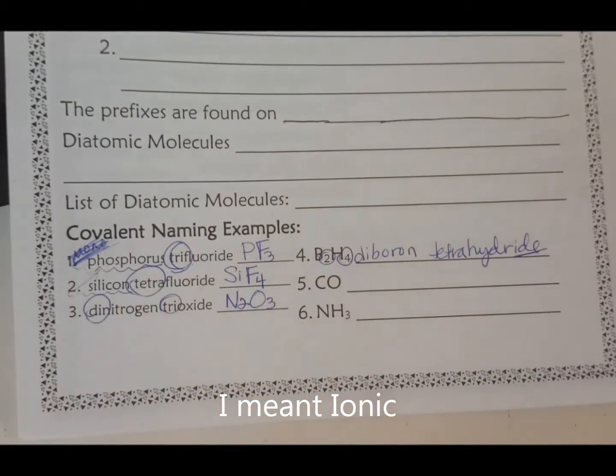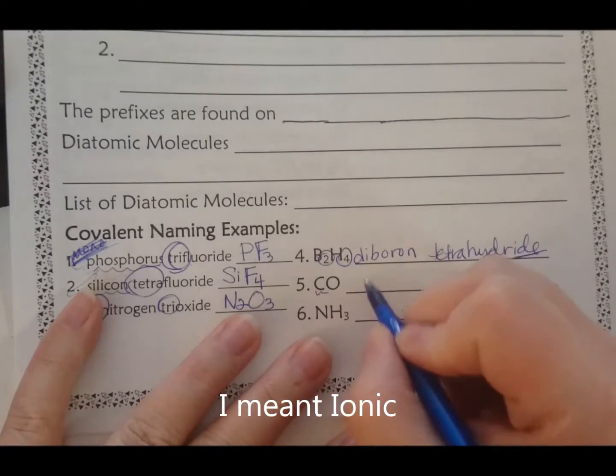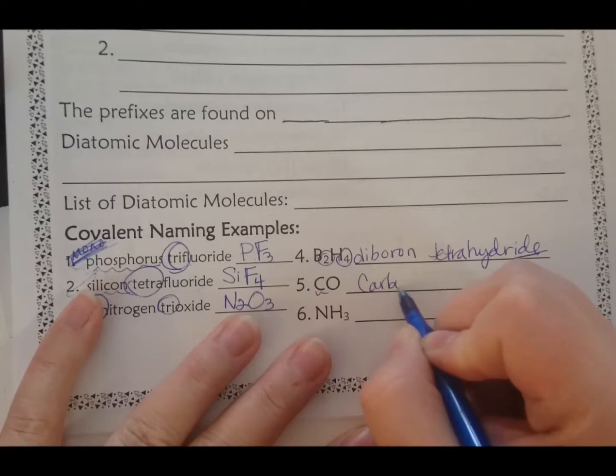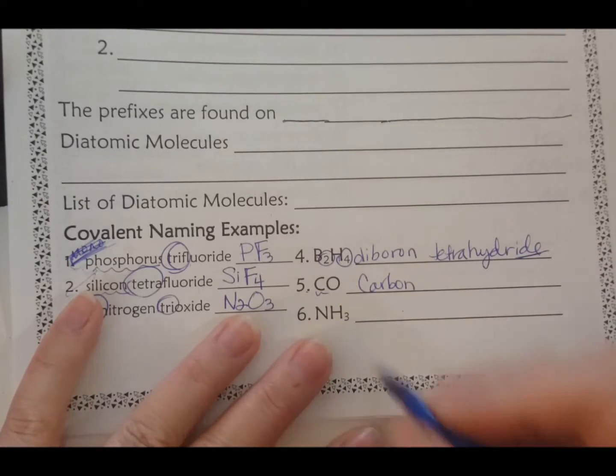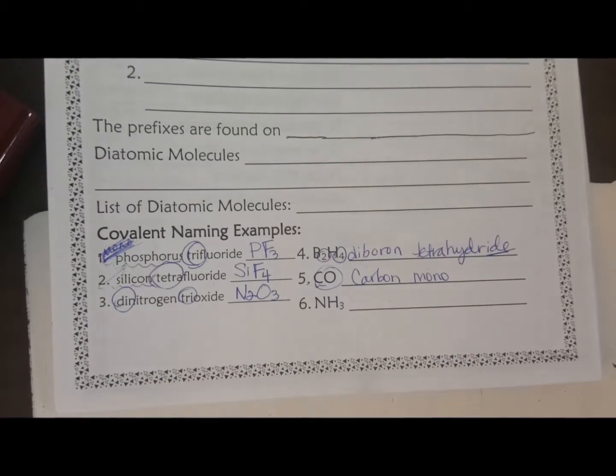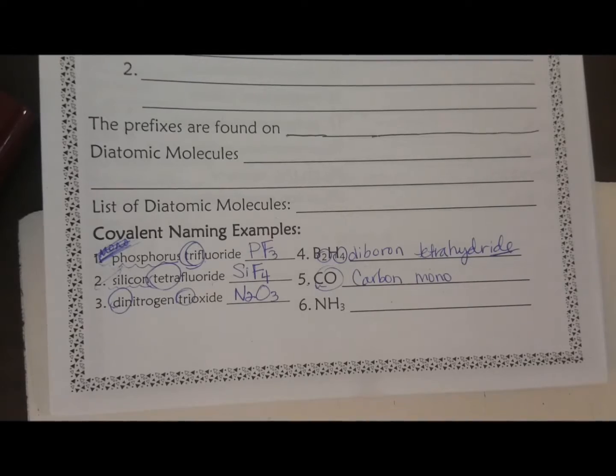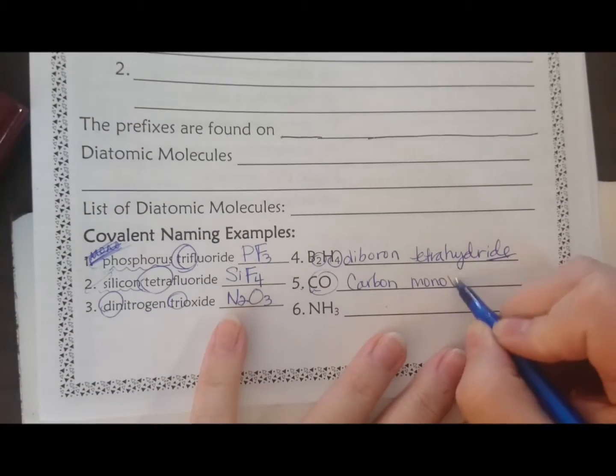You still change the ending on those just like you do for covalent. So C is carbon. Now I don't put the prefix on it because I don't have to - there's one O. I do have to put the prefix on that one because we've all heard of carbon dioxide, right? Well this is not that - this is carbon monoxide.